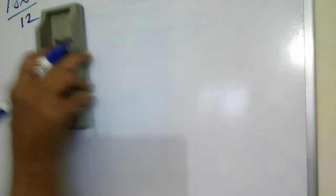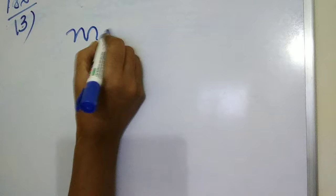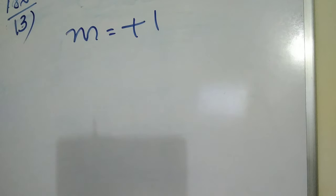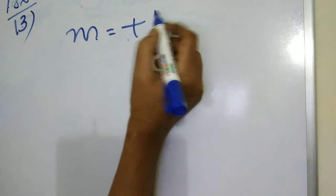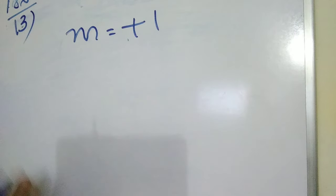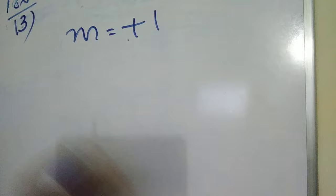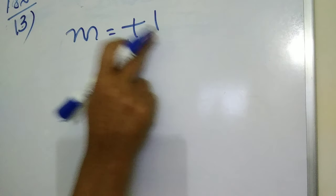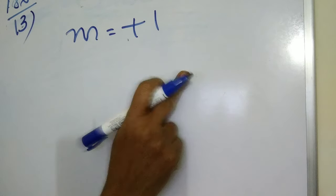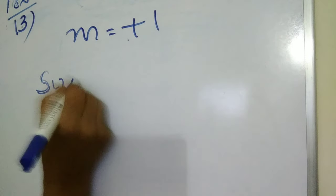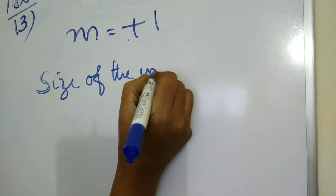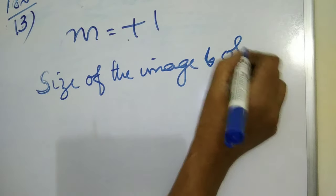Next we pass on to question number 13. The magnification produced by a plane mirror is given by plus 1. What does it mean? That is the question. Here magnification is plus 1. 1 stands for the ratio of size of the image to size of the object. That is, both of them are same. That is the indication of 1. Size of the image and object are same.